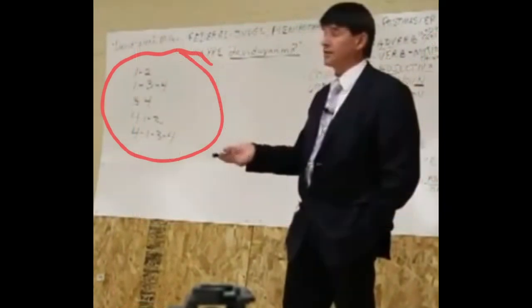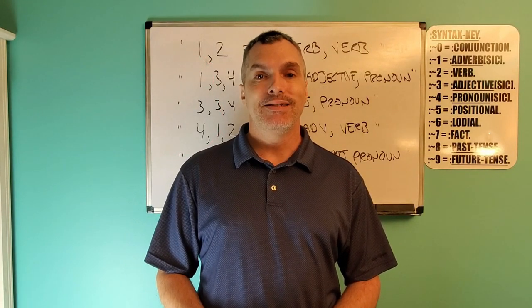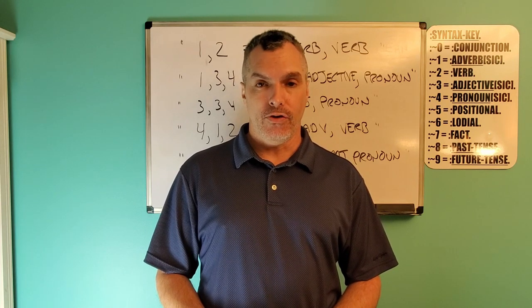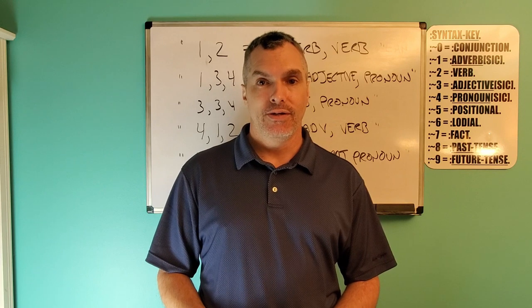As you can see from this screenshot taken from one of colon David Eiffel-Wing colon Miller's seminars, there are five syntax scenarios on his board there. We have a 1-2 scenario, a 1-3-4 scenario, a 3-4 scenario, a 4-1-2 scenario, and a 4-1-3-4 scenario. I will leave a link in the description to the video and timestamp of where you can find this information. In the correct sentence structure communication parse syntax grammar technology, there are nine syntax values: adverb, verb, adjective, pronoun, positional, lodial, fact, past tense, future tense, and of course the conjunction, which holds a neutral value of zero.